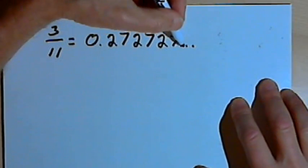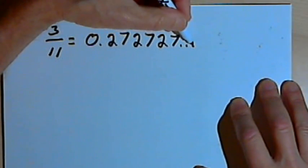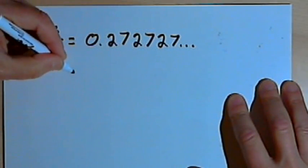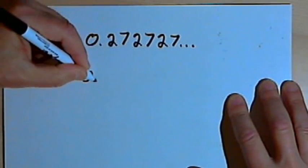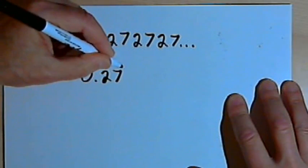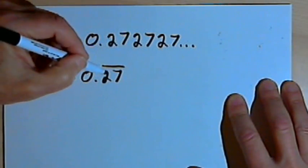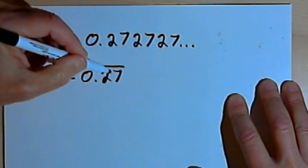So I'm just going to write an ellipsis, the three dots, to show that it keeps going. Sometimes you'll see this written as 0.27 and a bar over the digits that repeat, so a bar over the 27 to show that this goes on infinitely.